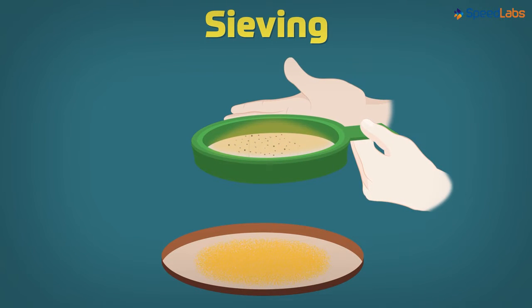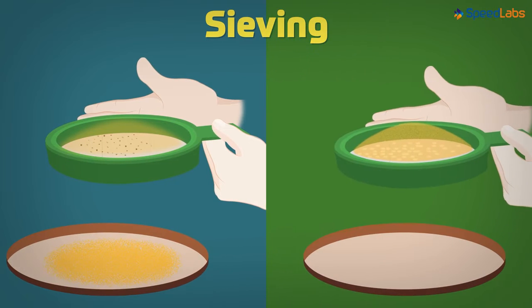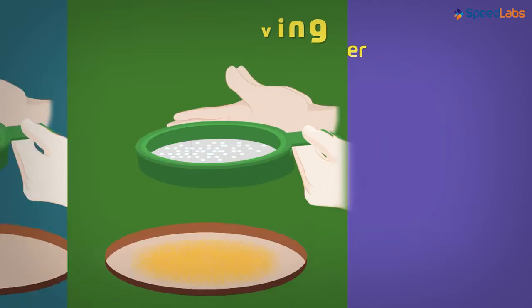Same will be our approach if we have sand mixed with sugar grains. Sieving would be the best option. But now comes the difficult task. How would we separate the mixture of sand with fine powder of sugar?